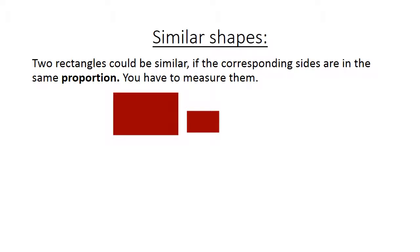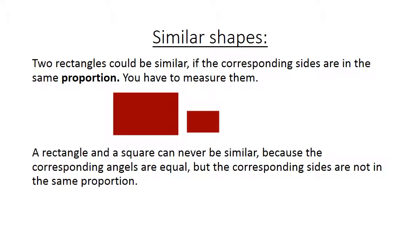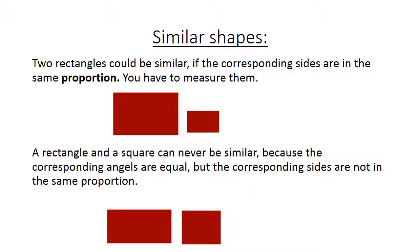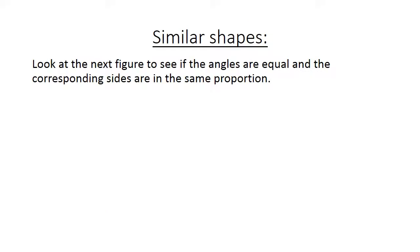We have two rectangles. A rectangle and a square can never be similar, because the corresponding angles are equal but the corresponding sides are not in the same proportion. Look at the next figure to see if the angles are equal and the corresponding sides are in the same proportion.